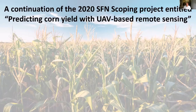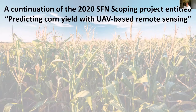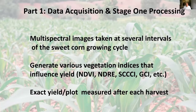This is a continuation of the 2020 SFM scoping project entitled 'Predicting Corn Yield with UAV-Based Remote Sensing.' The research study has three parts, the first being data acquisition and stage one processing.